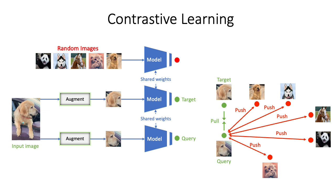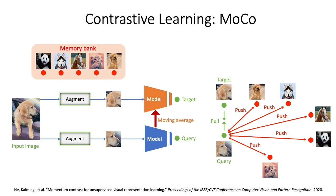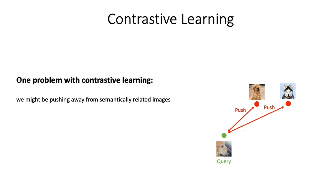The random images used for contrast are also called negatives. Instead of forwarding the random images in each iteration, we can use the output of the previous iterations. One technique for doing this is proposed in MoCo, where we maintain two models where one is a moving average of the other. But there is a problem: since we do not know whether the negatives in the memory bank are semantically related to the given image, we end up pushing their representations apart, which is not desirable.